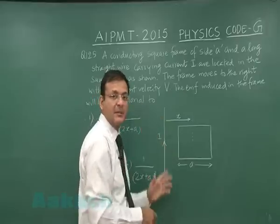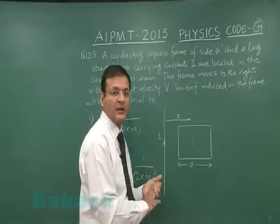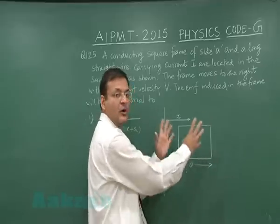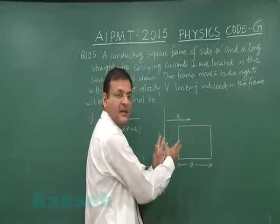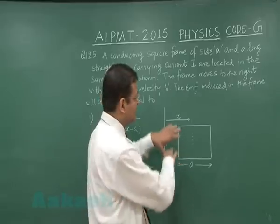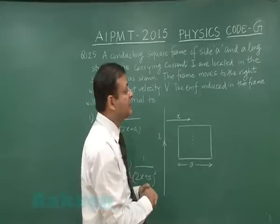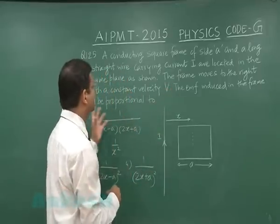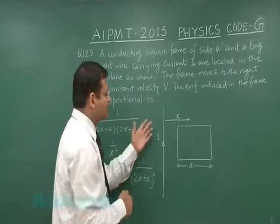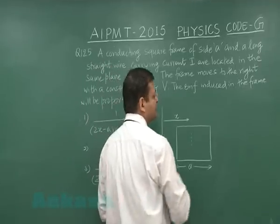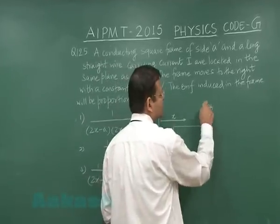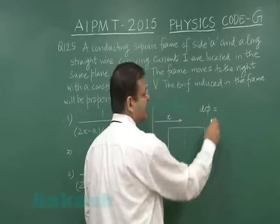The frame moves to the right. Now you see whatever magnetic field has been created by this current I, this is not a uniform one. This side is more, that side it is less. So as this will be moving on, the flux inside this square frame will be changing with time and that will be simply creating some emf. Now it is asking you to calculate the emf induced in the frame is proportional to. That means first you calculate what is the magnetic field. If you talk about the flux, your small amount of flux will be magnetic field created by this.